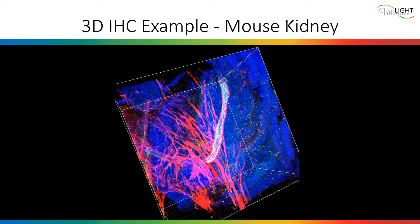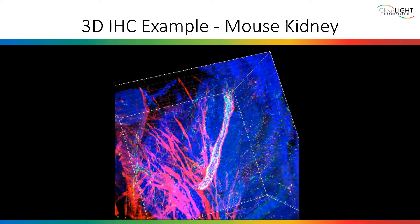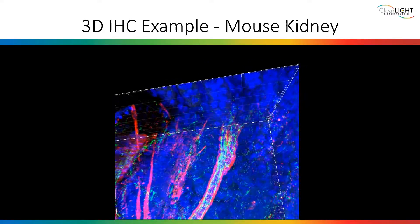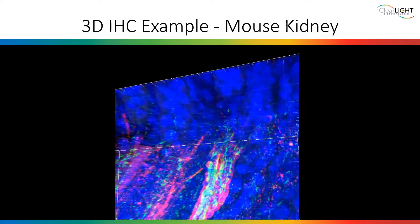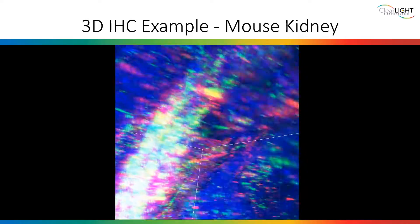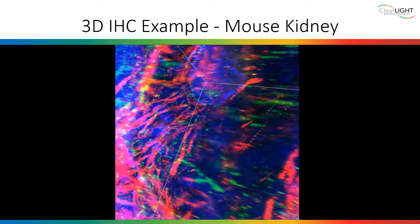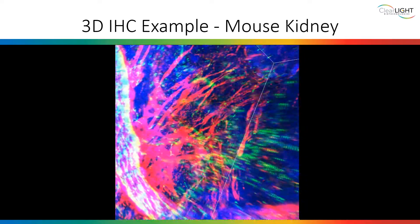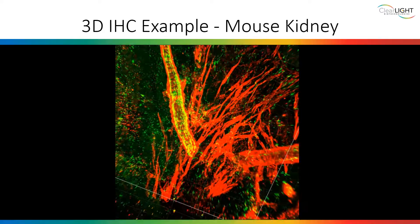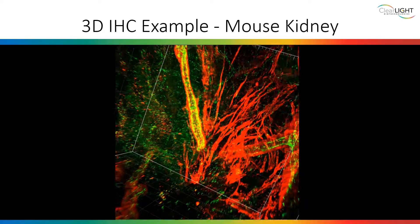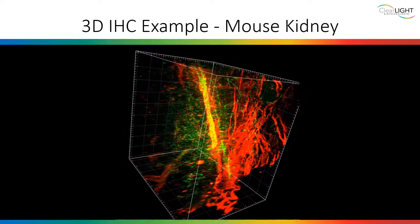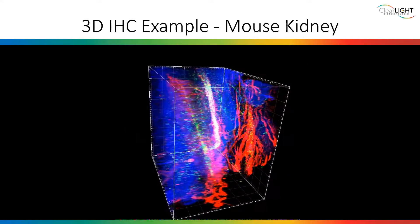As an example, here we look at a mouse kidney immunostained with alpha-smooth muscle actin, seen in red. You can also see CD31, in green, which is used to highlight vascular endothelial cells. And DAPI, shown in blue, is our nuclear counterstain.